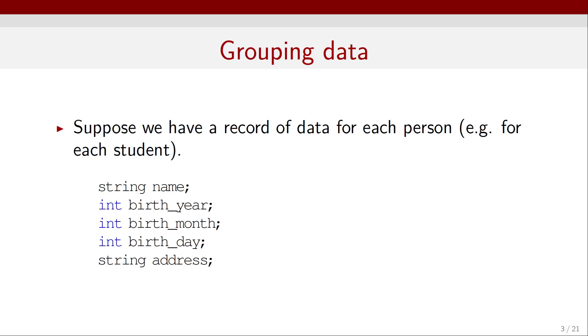Now, let's discuss how to group data. Suppose we have a record of data for each person, for example, a record for each student. We have a string that includes the name of the student, an integer that's the birth year, an integer that's the birth month, an integer that's the birth day, and a string that contains the student's address.